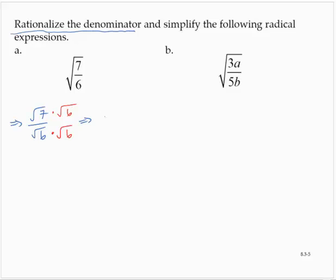So then that would give me the square root of 7 times 6 is 42. And in the denominator, square root of 6 times the square root of 6 is the square root of 36. And so that would give me square root of 42 over 6.